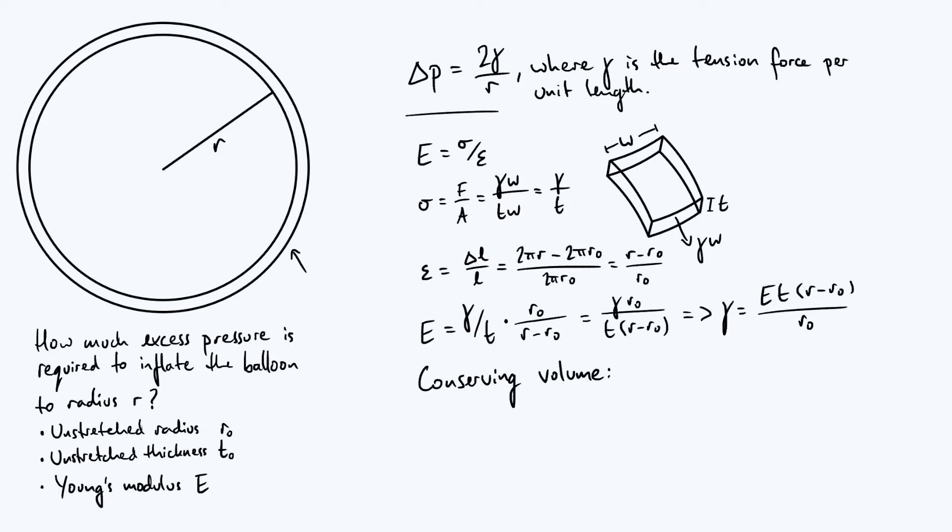Now if the thickness is small compared with the radius, which is definitely true for a typical balloon, then the volume of the actual rubber part of the balloon is the volume of a spherical shell. To get the volume of a spherical shell, you can do the surface area of the shell times its thickness.